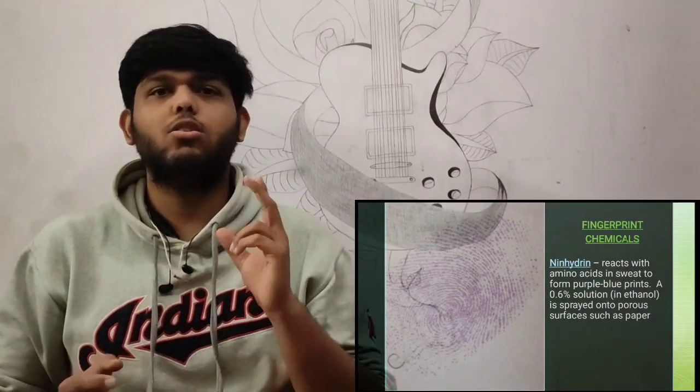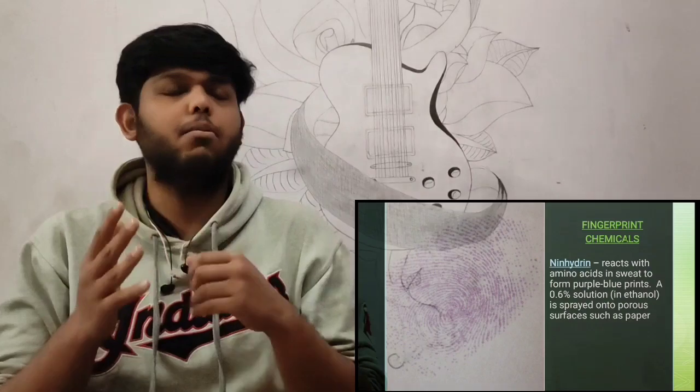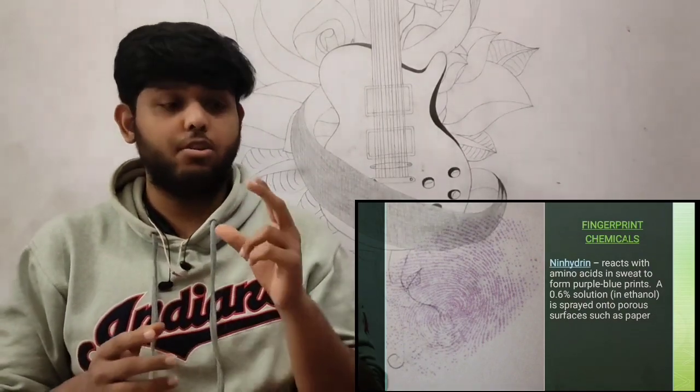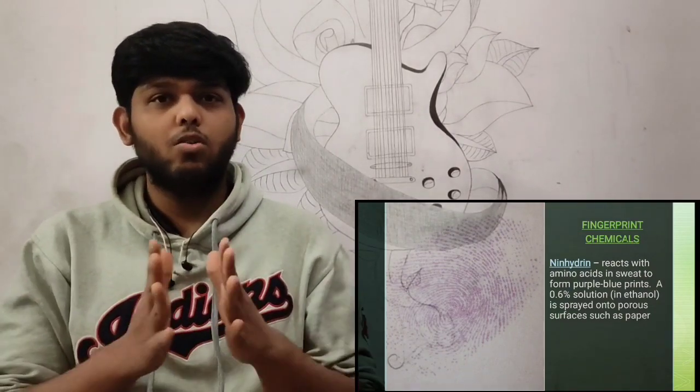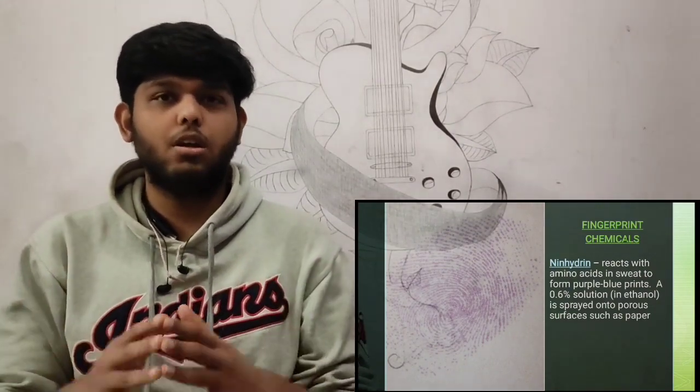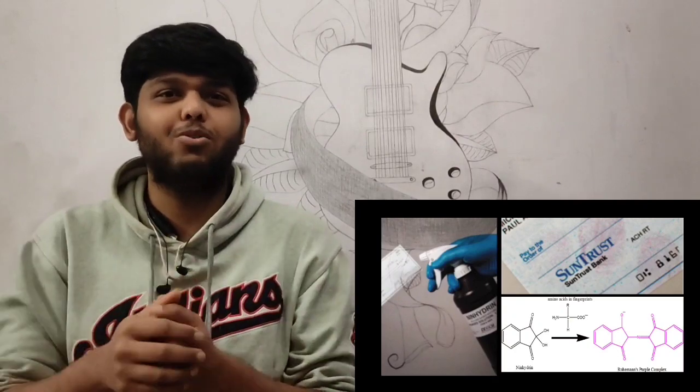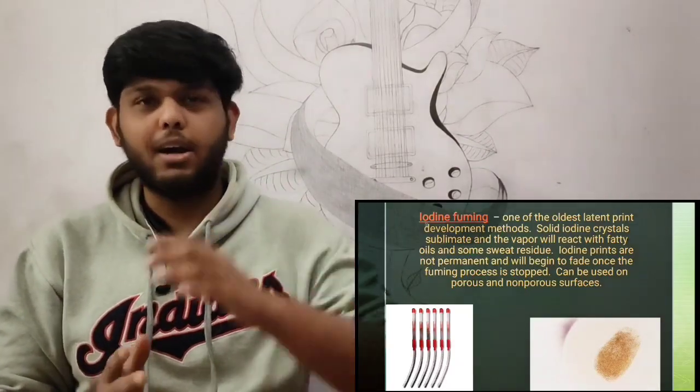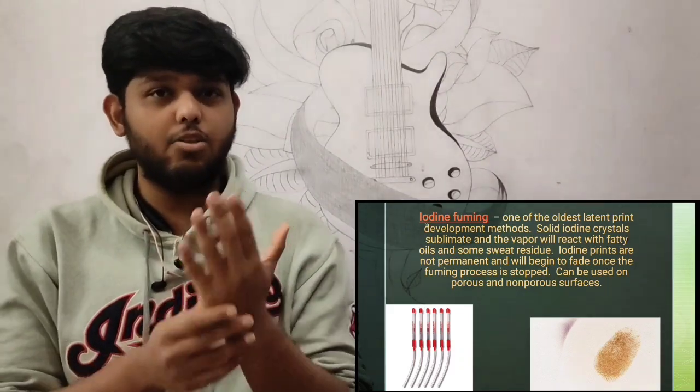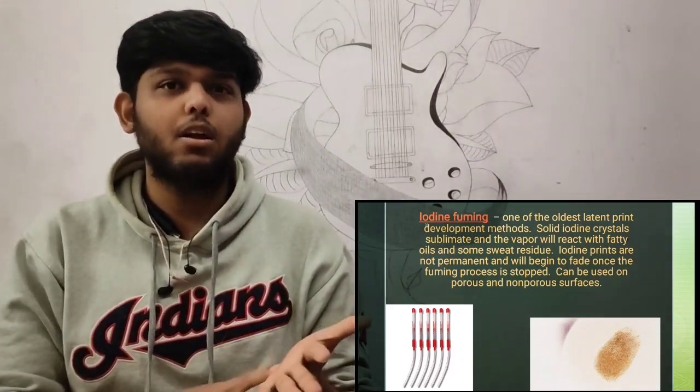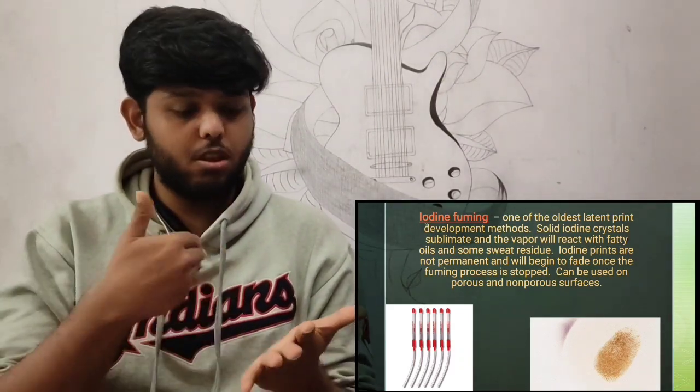Iodine fuming is the oldest fingerprint development method. We take crystal iodine and heat it. The vapors will be cast in a chamber in the form of gas. We place our sample inside. Because of fatty acids and sweat present on that sample, it reacts and develops the fingerprint in visible form.